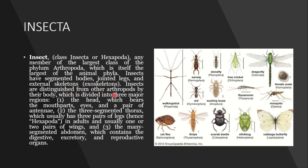Insects are distinguished from other arthropods because their body is divided into three major regions. First is the head, which bears mouthparts, eyes, and a pair of antennae. Second is the three-segmented thorax, which has three pairs of legs — meaning six legs total, which is why they are called Hexapoda. One or two pairs of wings are also present in adults.